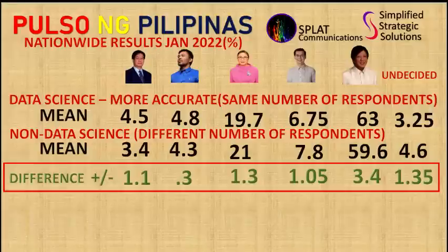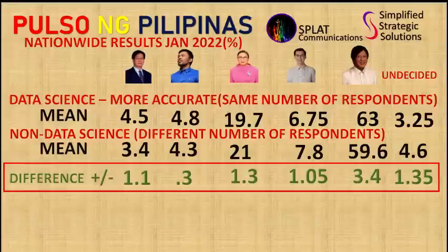Let us now move to the quantification of these data. We shall quantify the mean from the comparison between LALO and SPLAT, as data science dictates that those figures are more accurate than the comparison of the five survey results. By quantifying the mean, we shall be able to provide the most accurate presidential preferences as of April 2022.